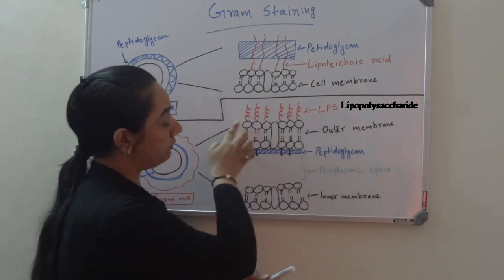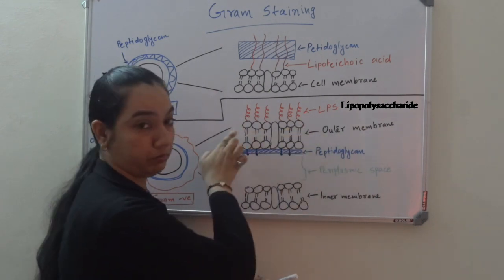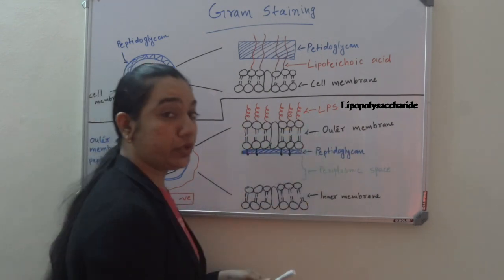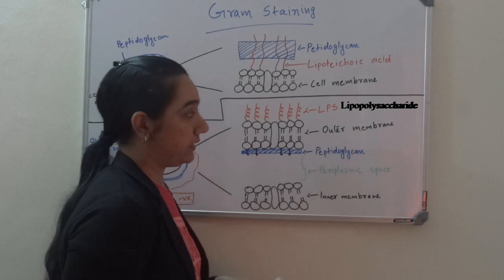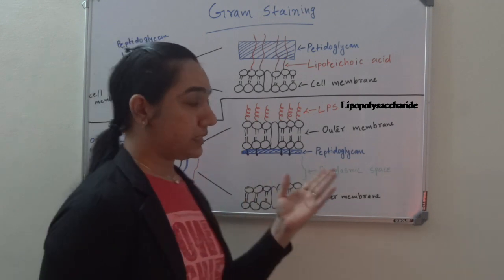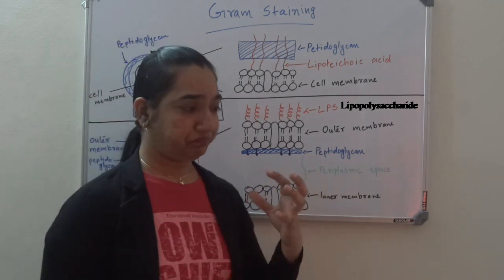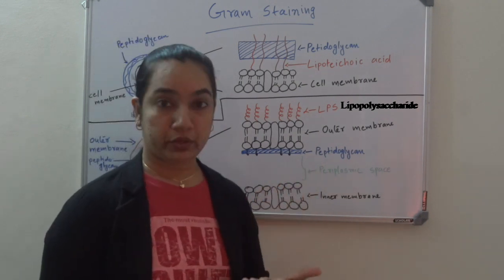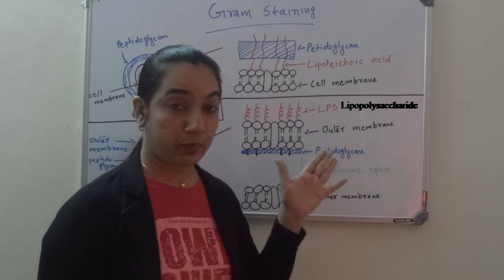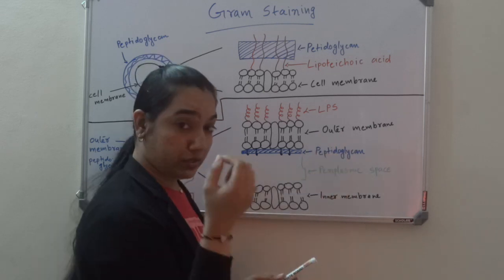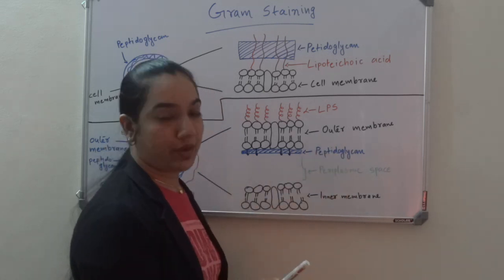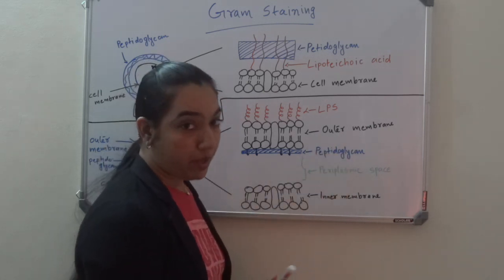The outer membrane of gram negative bacteria is very rich in lipopolysaccharide on its lipid moiety. Lipopolysaccharide is essentially endotoxin. This LPS is present only in gram negative bacteria.